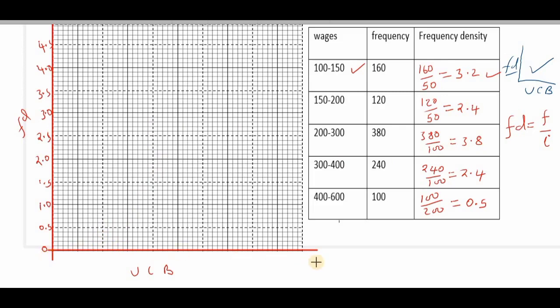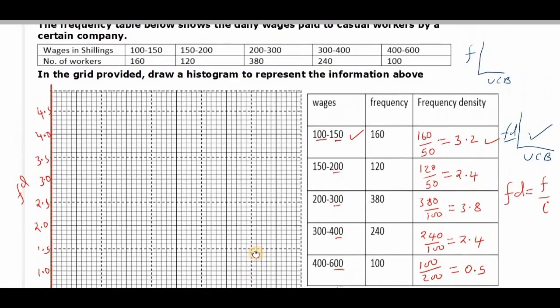On the x-axis for the upper class boundaries, we begin with the lower class boundary for the first class, that is 100. Then the rest will be the upper class boundaries: 150, 200, 300. We have equal intervals 150, 200, 250. So remember this is the x-axis, and this other is the y-axis.